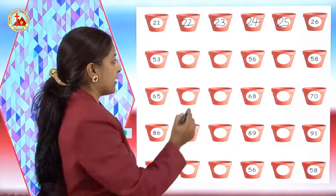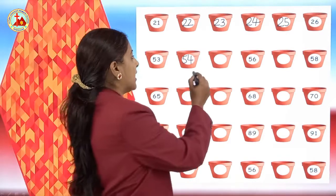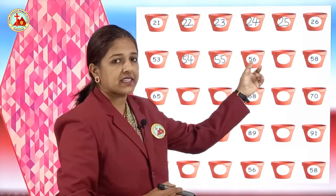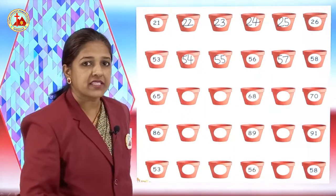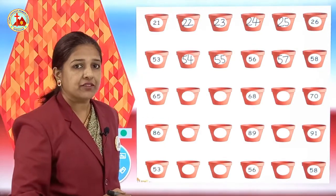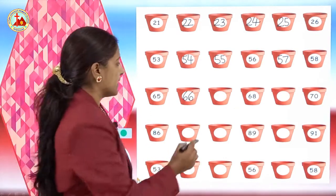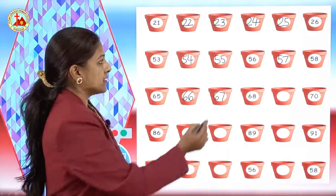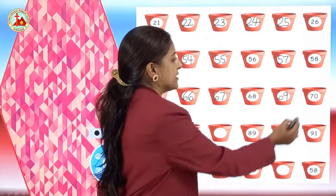Next, 53. After 53 comes 54 — here 54 you have to write. After 54, 55. Then 56 is written over here. After 56, 57 is the missing number, so we will write 57. Next, number 65. After 65 comes 66, then 67, then 68. Here we are just revising the missing numbers till 70. After 68 comes 69, and 70 is written.